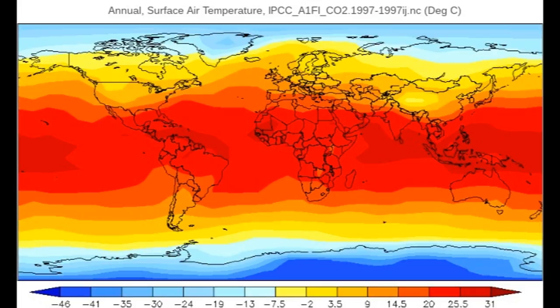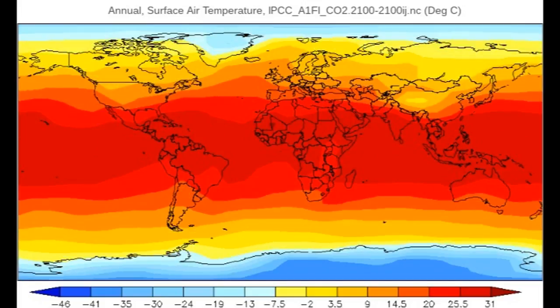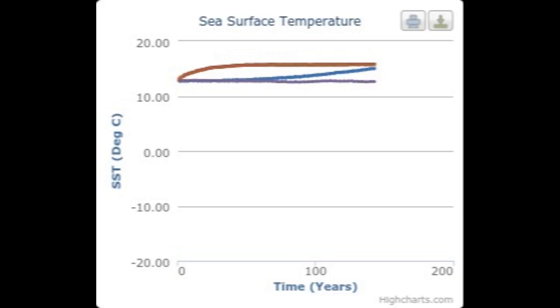This visualization shows the annual surface temperature in 1997. This shows the same for 2100 and as you can see it is much hotter, especially around the equator. This makes sea surface temperature go up.